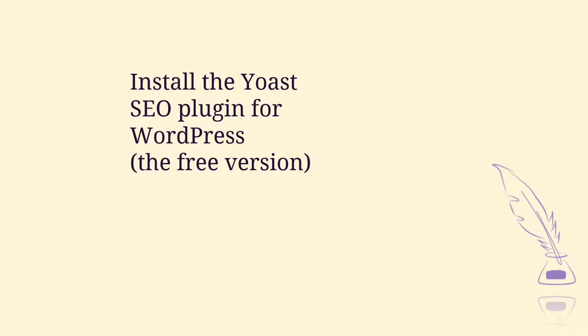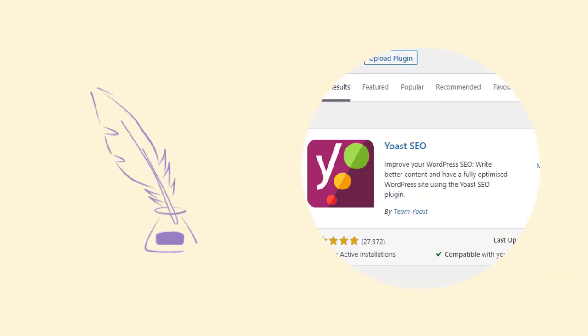Finally, to help get your post ranking on page one of Google for at least one search term, install the Yoast SEO plugin for WordPress. It has a free version and a premium version, but the free version is very helpful and more than adequate when you're first starting out. To install it, go to Plugins in your WordPress admin dashboard, search for Yoast SEO, and click to install and activate it.